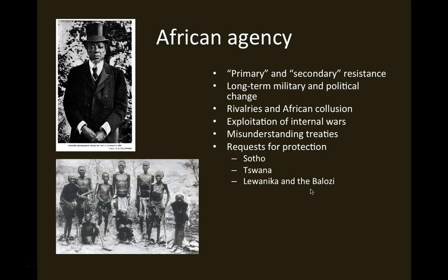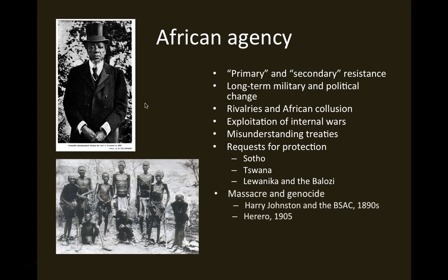Yet another example is Lewanika, a chief among the Lozi people — this is him pictured here, having donned some European garb. Lewanika in the region of what is now Zambia asked the British to establish a protectorate over that area, and Cecil Rhodes was only too willing to oblige, thinking that region probably had the same kind of gold and diamond resources as Southern Africa. In some unfortunate cases where Africans were particularly intransigent in resisting European expansion, there were massacres.